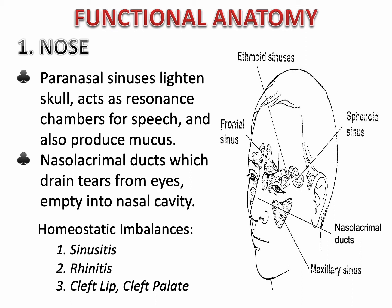Nasolacrimal ducts, which drain the tears from the eyes, also empty into the nasal cavity. They carry tears from the right and left lacrimal glands, which are located at the upper outer canthus of each eye. Whenever there are extreme emotions, eye injury, or irritants to the eye, the lacrimal glands can secrete tears. These empty into the nasolacrimal duct connected to the nasal cavity — that's why when we are crying, it feels as if we also have a cold.